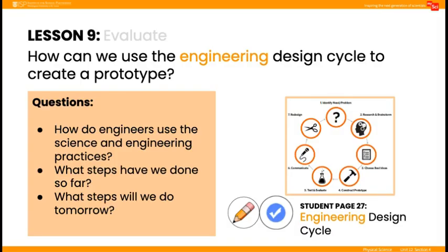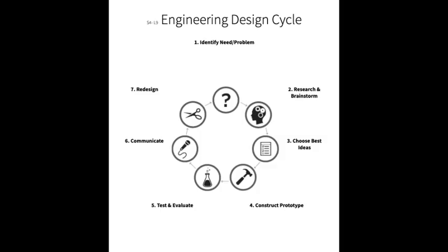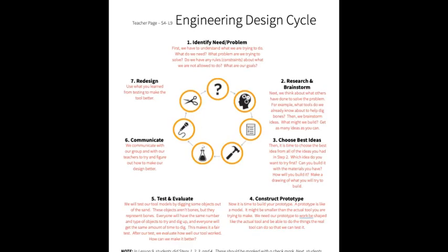In the evaluate, review the ways engineers use the science and engineering practices. Then direct students to student journal page 27 to review what steps of the engineering design cycle they have done so far, by placing a check mark beside each completed step and a star beside the next steps that are not yet completed. Teacher guidance for the engineering design cycle is provided on teacher page 13.